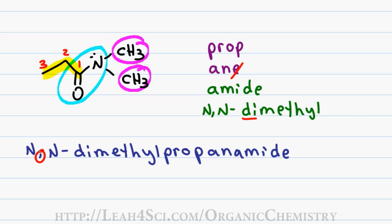Notice that we have a comma between the two N's and a dash between the N and the name. And that's because even though the letter N is not a number, we treat it as if it's a number to show where the substituents are attached. So think of this as the number N rather than the letter N.